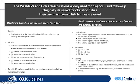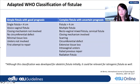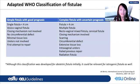In reality, the adapted World Health Organization classification is now widely used. It classifies fistulas between simple fistula with good prognosis and complex fistula with uncertain prognosis. A simple fistula is single, below 4 cm, is a vesicovaginal fistula with closing mechanism not involved, no circumferential defect, minimal tissue loss, ureters not involved, and it is the first attempt at repair.